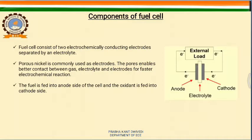Next, the components of the fuel cell. A fuel cell has three basic components: two electrodes separated by an electrolyte. The fuel cell consists of two electrochemically conducting electrodes and an electrolyte. Generally, electrodes are porous because the pores enable better contact between gas, electrolyte, and electrodes for faster electrochemical reactions.